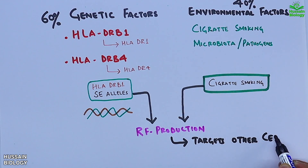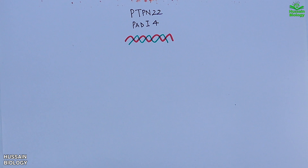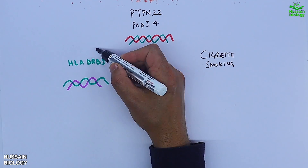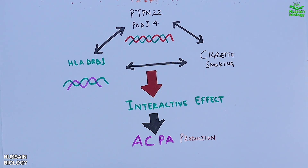The RF can target and destroy other healthy cells. Additionally, the PTPN22 and PADI4 genes — single nucleotide polymorphisms in these genes — are also risk factors for rheumatoid arthritis. PTPN22 and PADI4, along with HLA-DRB1 and cigarette smoking, show an interactive effect leading to ACPA (anti-citrullinated protein antibody) production. This ACPA targets self-modified antigens in the body.